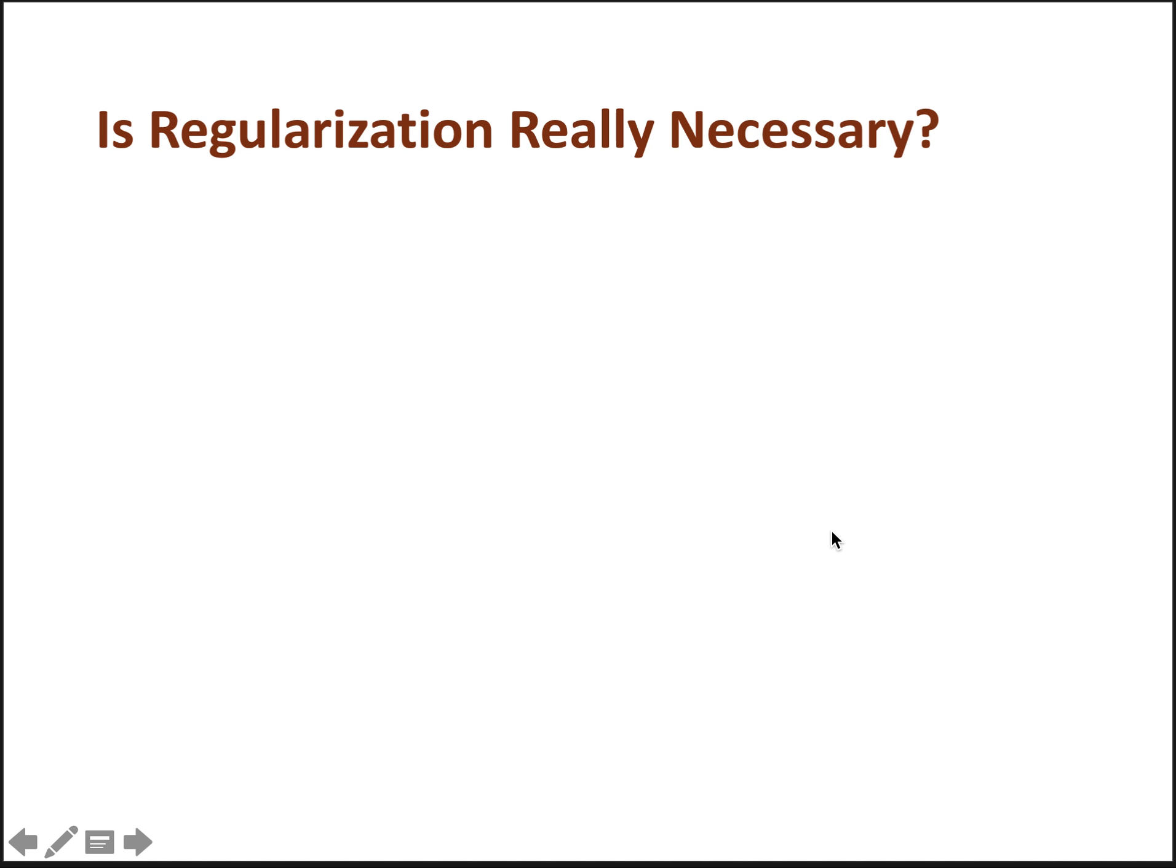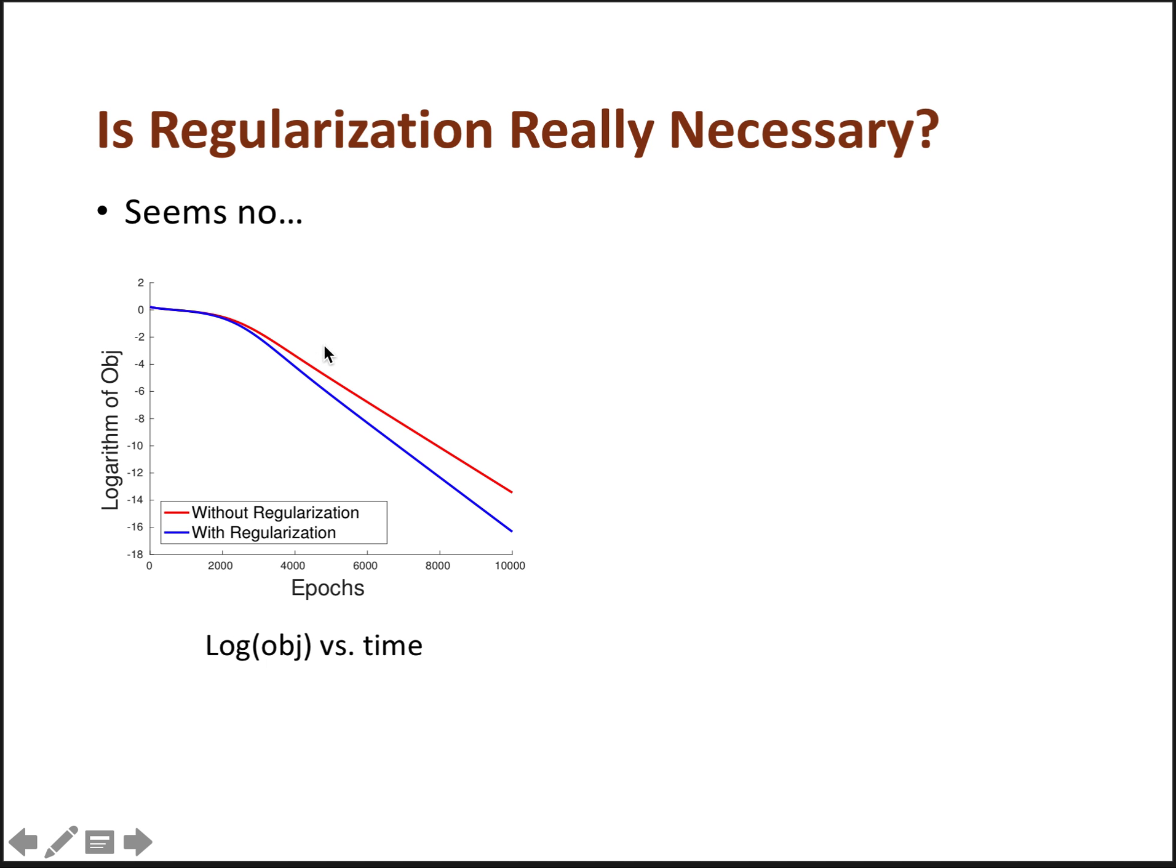But here we want to ask, is regularization really necessary? The answer seems to be no. So we just run gradient descent on matrix factorization with and without regularization. And we can see that even without regularization, gradient descent can still converge to a global minimum pretty fast.